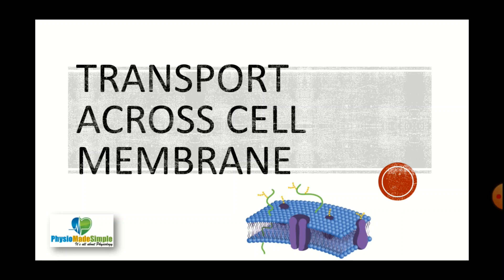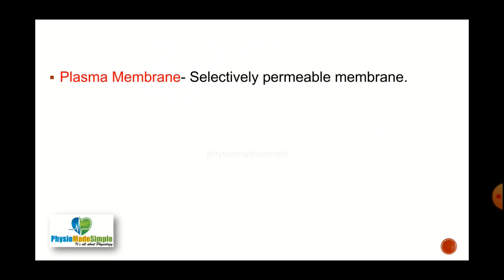When we speak about transport mechanisms, the first thing that should come to mind is the plasma membrane. Like the skin of a body that protects the underlying organs, the plasma membrane is the skin of the cell. It is the limiting membrane, and it is only through that membrane that materials can enter and exit the cell. The plasma membrane is highly selective — it has strict rules and does not permit the entry and exit of everything. Only those that have permission can enter and exit, which is why it is called a selectively permeable membrane.